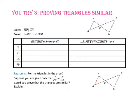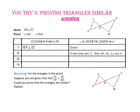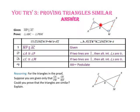Pause the video and try number 3. Given that side MP is parallel to side AC, remember that if two lines are parallel, then alternate interior angles are congruent. Therefore, angle A is congruent to angle P and angle C is congruent to angle M. Since two angles of one triangle are congruent to two angles of another, triangle ABC is similar to triangle PBM by the angle-angle similarity postulate.